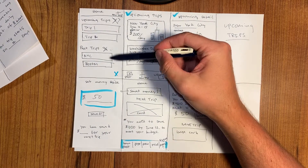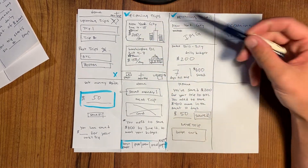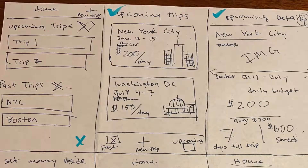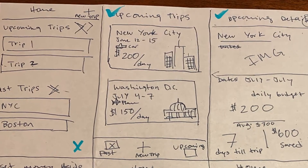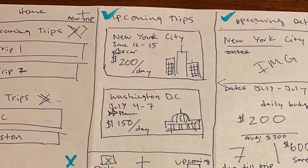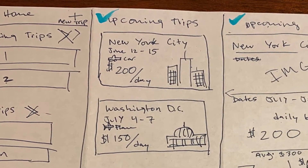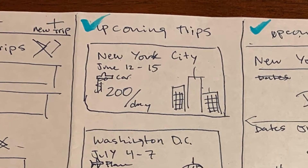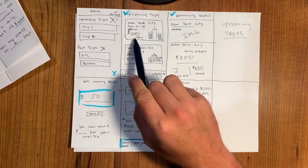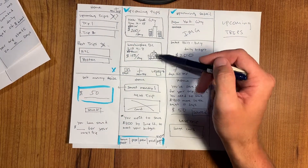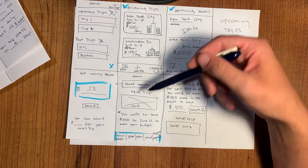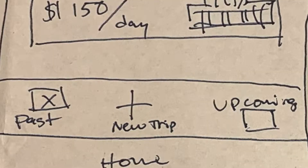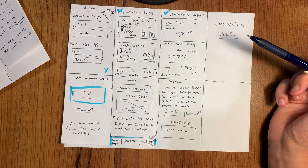Then I thought this could be the home page — just your past trips and upcoming trips listed out. Then I got a little deeper and thought maybe the card would be nicer if your upcoming trip showed, like, a picture of New York as a kind of faded background, along with the date, how you were traveling — car or plane — and your estimate for the day. These cards would be scrollable, with a bottom navigation.